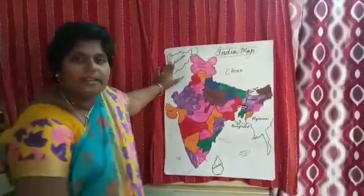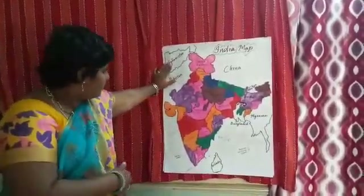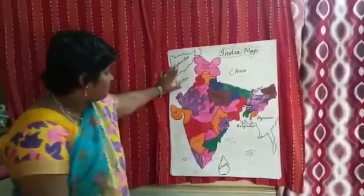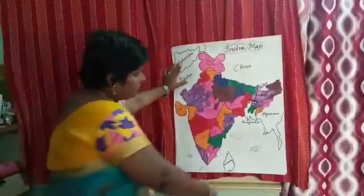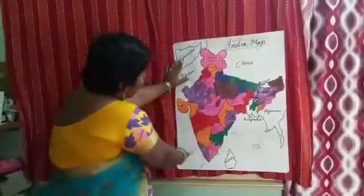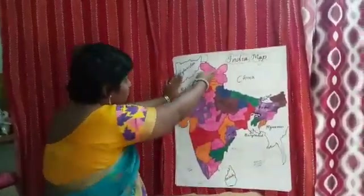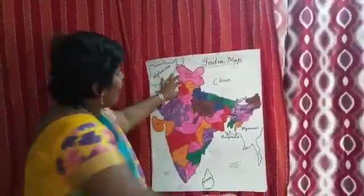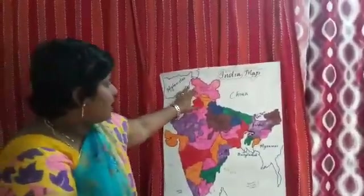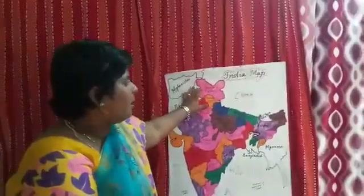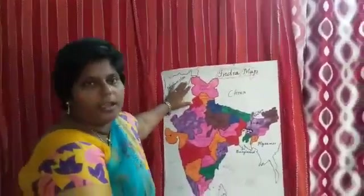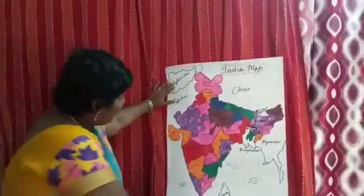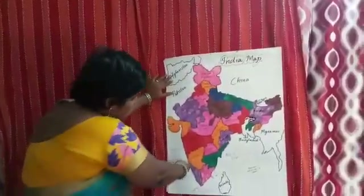And in the map, we can also see our union territories — like Andaman and Nicobar, Lakshadweep, Jammu and Kashmir. And Chandigarh is the joint capital of Himachal Pradesh and Haryana, so it is also a union territory.